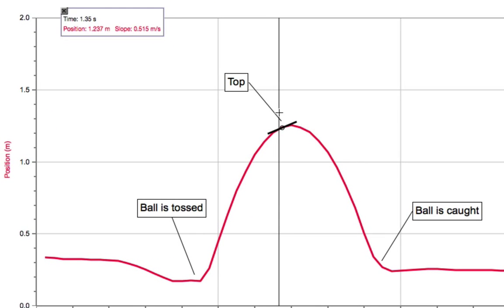For instance, here the tangent line is fairly shallow, meaning the ball's height isn't changing very quickly. On the other hand, at this point, it's fairly steep, meaning the ball is moving quickly.